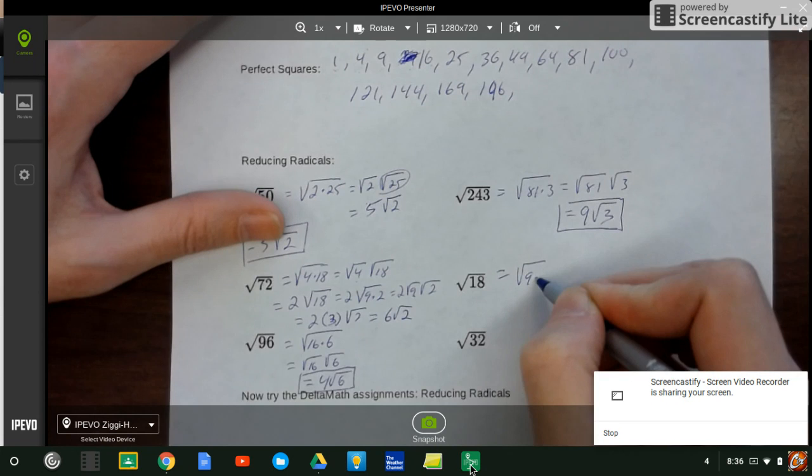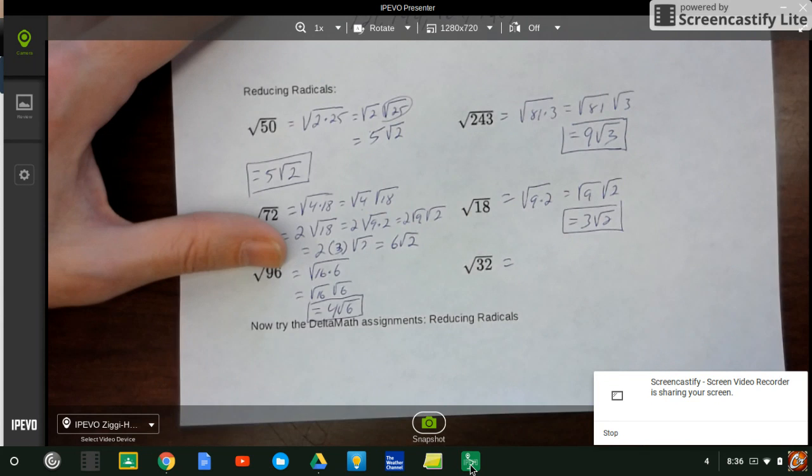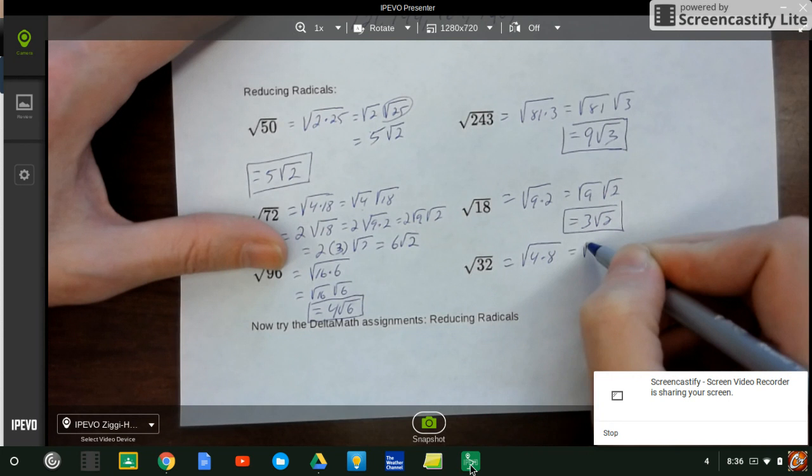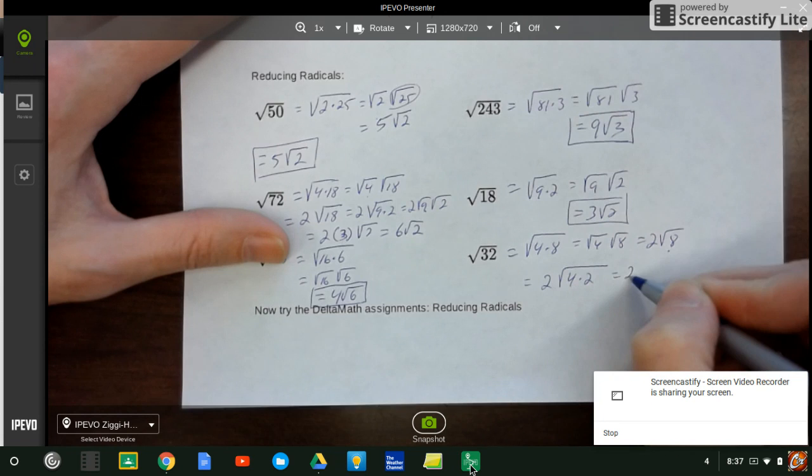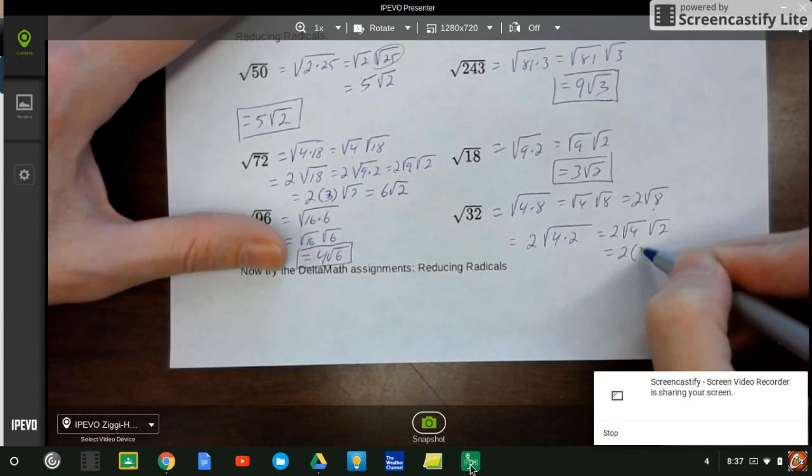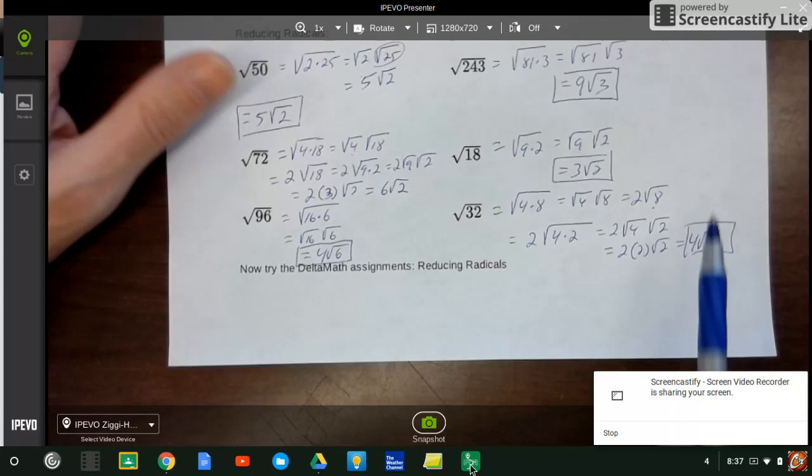18 is easy because we know 9 times 2 is 18, so square root of 9, square root of 2, 3 radical 2. 32, let's see, 4 goes into 32 eight times. So that gives me 4 times 8, square root of 4, square root of 8, or 2 square root of 8. But 8 can be broken down, so the 2 stays out here. 8 can be broken down as 4 times 2, so that's 2, radical 4, radical 2. So now I've got 2 times 2 radical 2, and that gives me 4 radical 2. Remember, the 4 is outside the radical - once you use the radical up, it's no longer there.